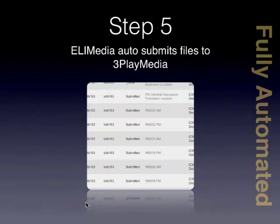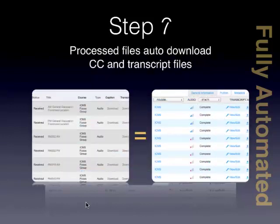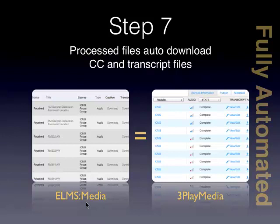Once submitted, it automatically gets queued. There's a cron job that runs every night. It looks at the system, sees which ones have been queued for submission, and pushes them all up. Nightly then, our system looks at 3Play Media's system to see if any are complete. If they are complete, they get downloaded immediately and associated directly to that file. We've eliminated the whole manual process. We've streamlined the approval process to ensure we are captioning what we need to caption in a more efficient way.